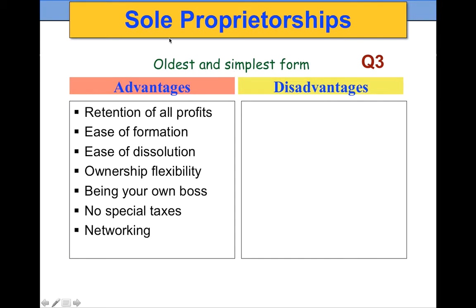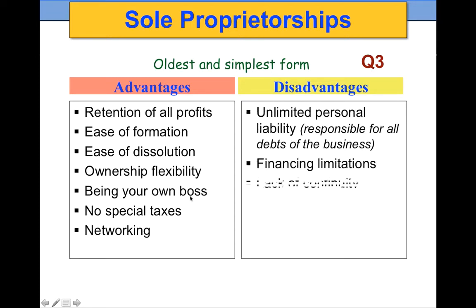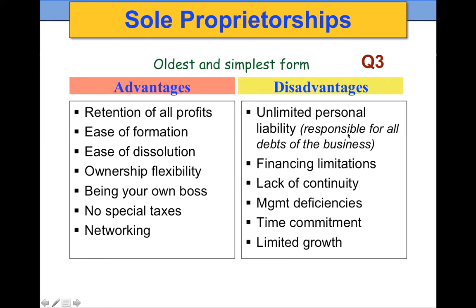The advantages of a sole proprietorship include keeping all the profits after taxes and being your own boss. The biggest disadvantage is unlimited personal liability — in the eyes of the law, you and your business are the same entity, so you are responsible for all liabilities of your business. If your business owes money, the IRS can go after your personal assets — your car, your house — there is no legal separation between business and personal assets. For financial purposes, however, we will separate them so the owner knows how much she makes from the business.